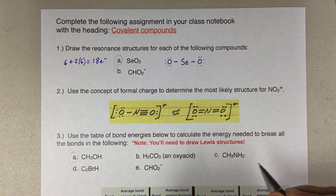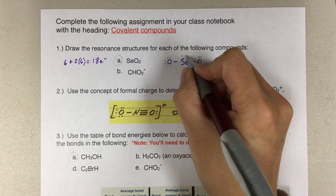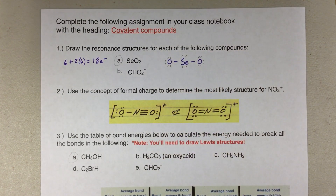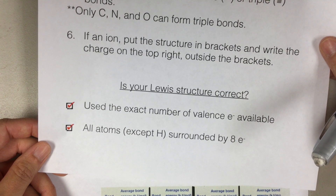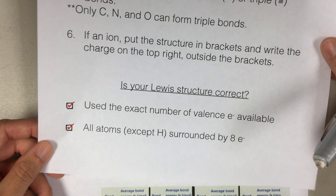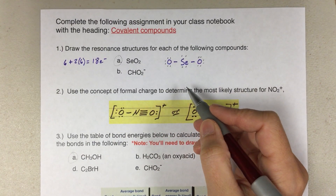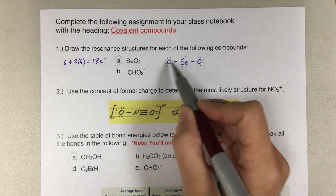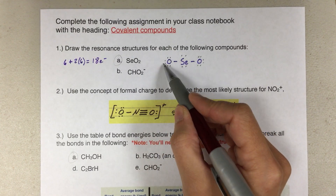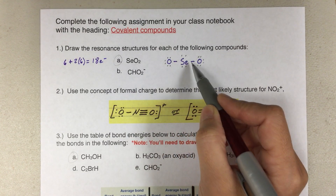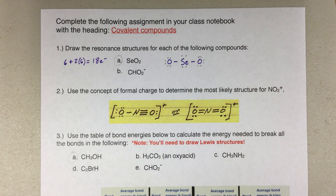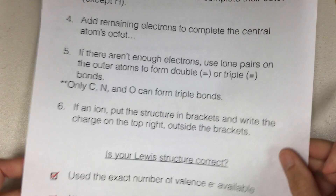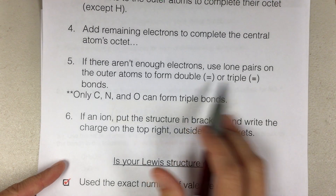Then I need to complete the central atom's octet. But remember, we need to ask: did we use the exact number of valence electrons, and did we surround everyone with 8? We surrounded everyone with 8, but let's check the count — 2, 4, 6, 8, 10, 12, 14, 16, 18, 20. We have one pair too many, so that means we need to use a double or triple bond.